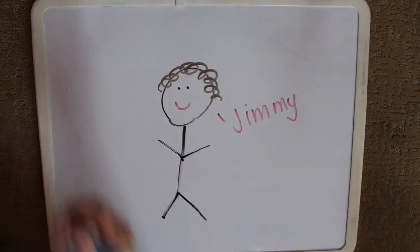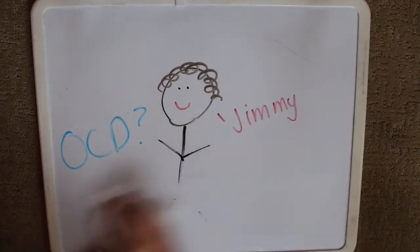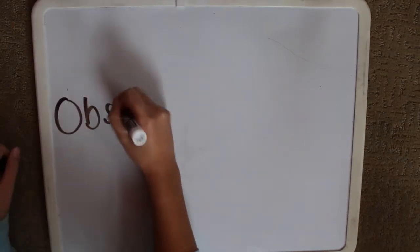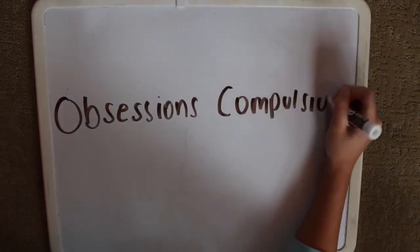So you think your son Jimmy has OCD. Well, let's look at the characteristics of OCD. OCD is characterized by two main things: obsessions and compulsions.